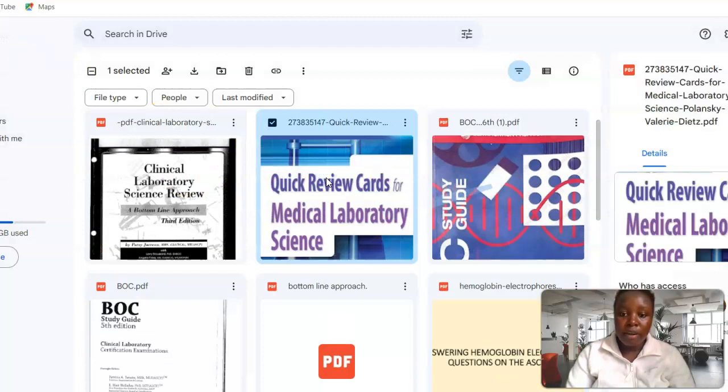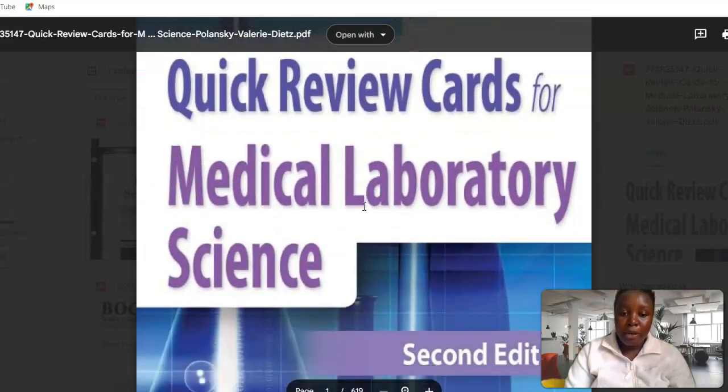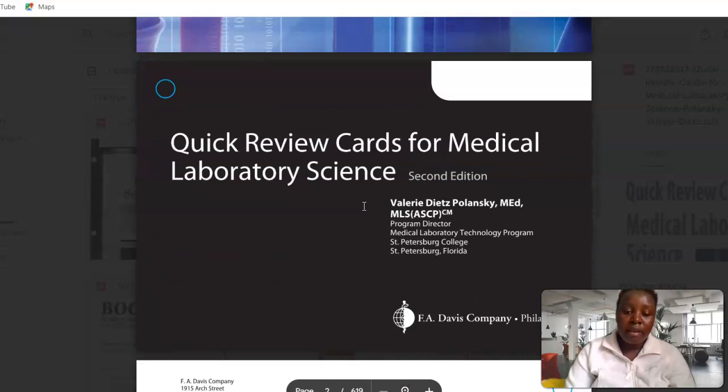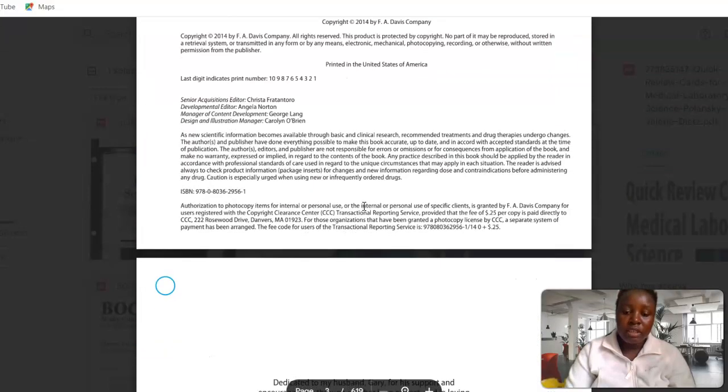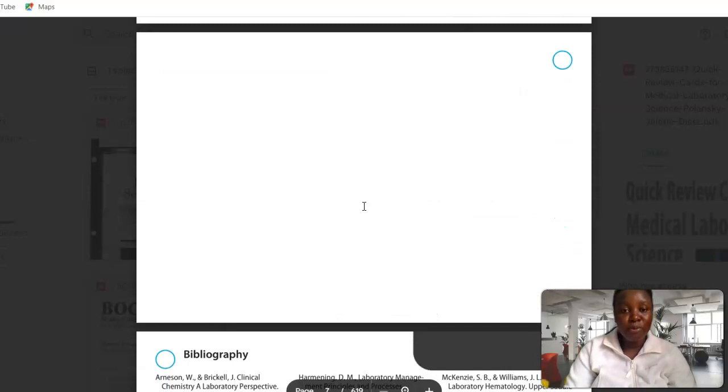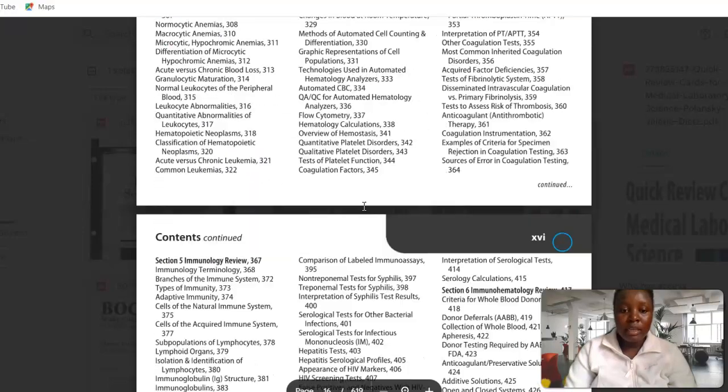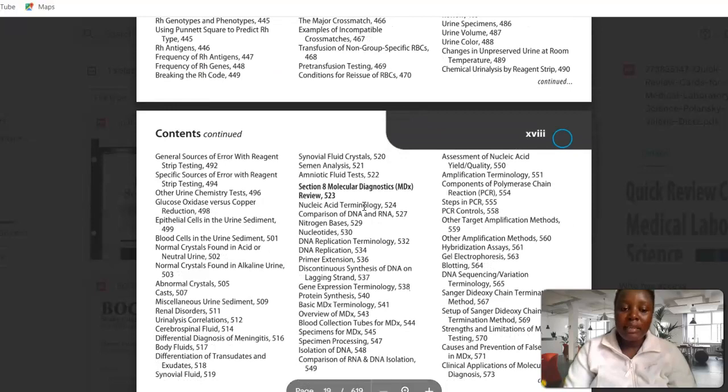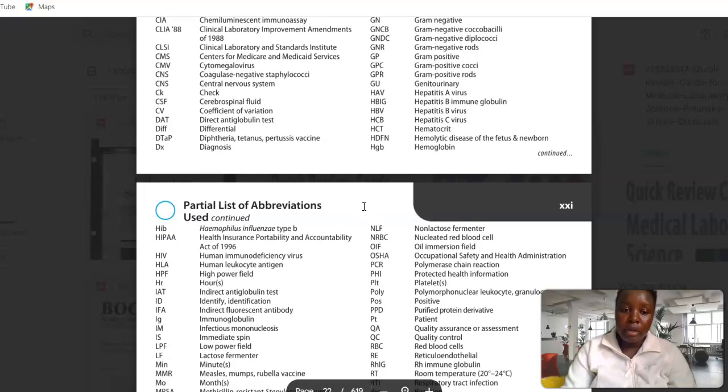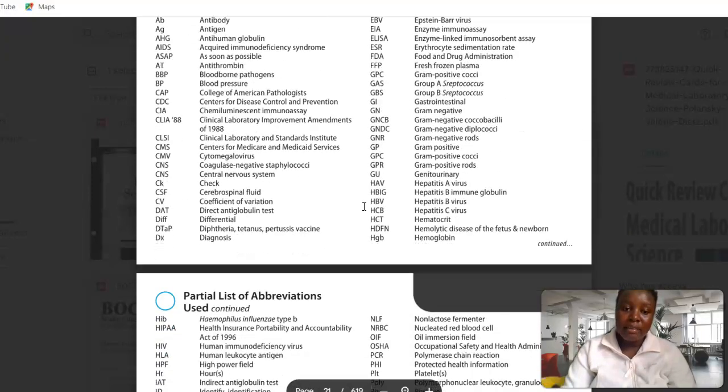Another book that you need to review that is very important is Quick Review Cards for Medical Laboratory Science by Valerie Polansky. These are summaries of each subject. For example, you've been out of school for so long and you don't know exactly where to start from or what to read about. This book gives you an overview of all the subjects in summarized form.